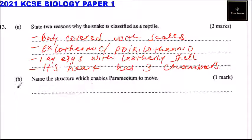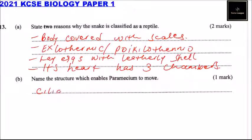Part B: Name the structure which enables paramecium to move. The structure is cilia. That's how you answer that — you get three marks.